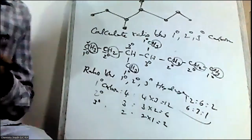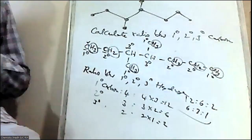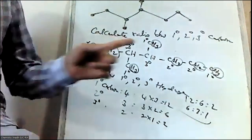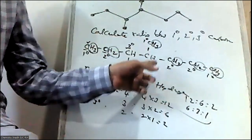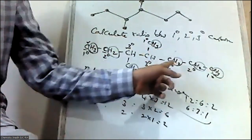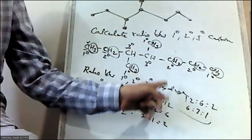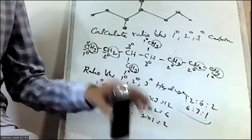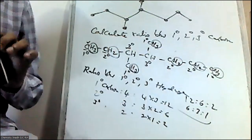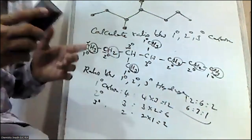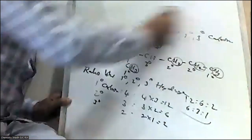So this is the type of question we will be asked — ratio between primary, secondary, tertiary carbons, and also ratio between primary, secondary, and tertiary hydrogens. I am giving you some examples, so please solve them and post in the comment section.